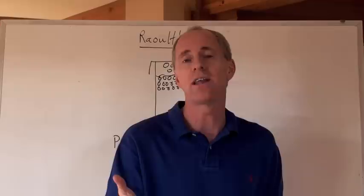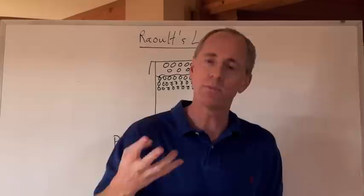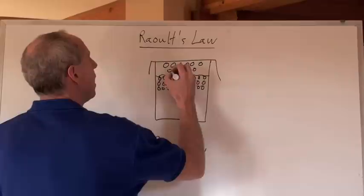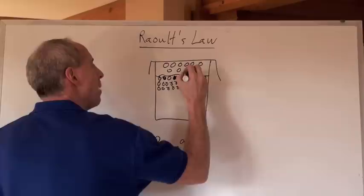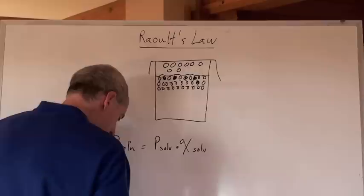Now what happens to that vapor pressure when we add a solute? When we talked about that before when we talked about boiling point elevation and freezing point depression. When we get solute molecules that are introduced, a blocking effect occurs for the evaporation of the solvent and so therefore the vapor pressure goes down.